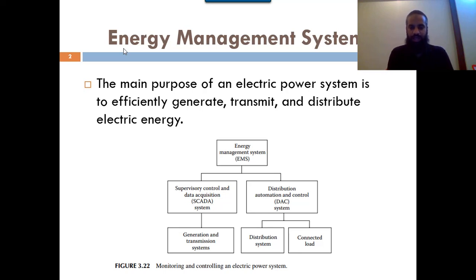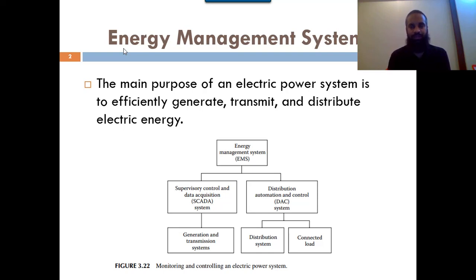We usually refer to these energy systems as either SCADA or as Distributed Automation and Control (DAC) systems. In the DAC system, used in the distribution section, we have a grid station with multiple loads and multiple feeders, requiring a distributed system that measures power values separately with no centralized control. In the generation and transmission system, we prefer a SCADA system, which is a centralized control system that can monitor and control all parameters.